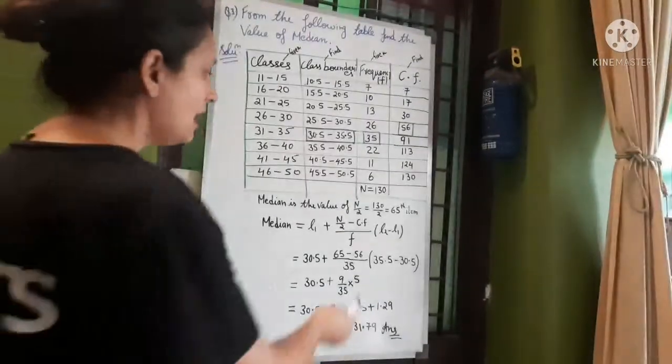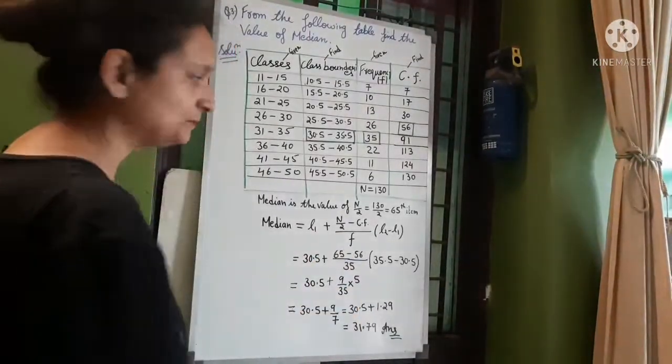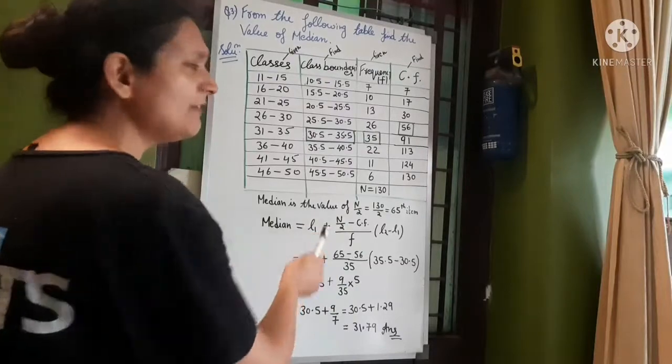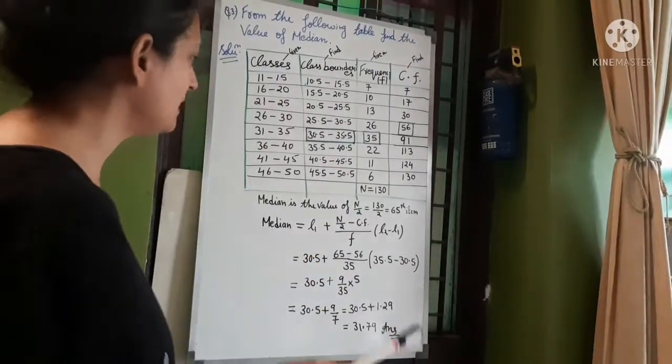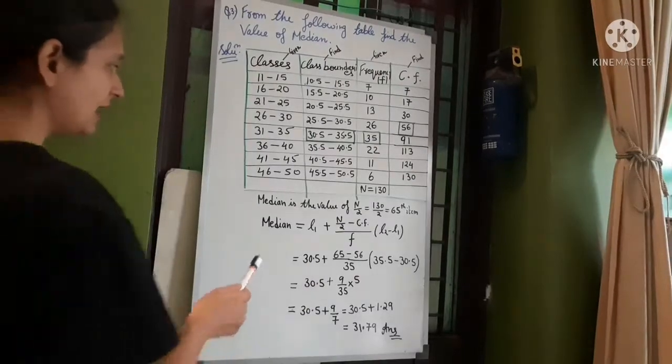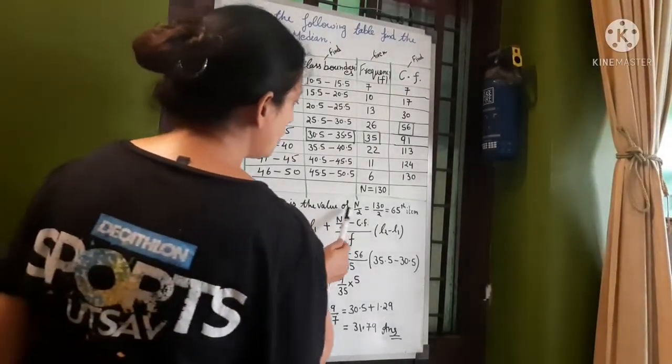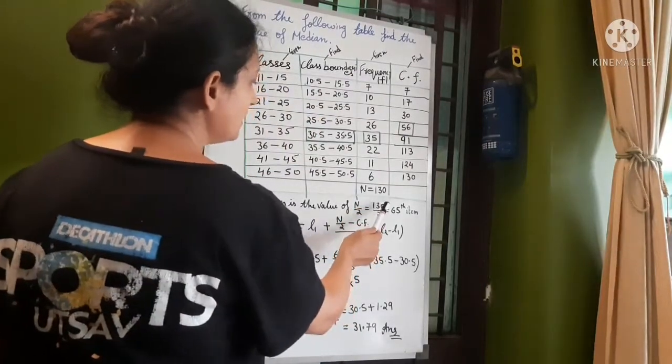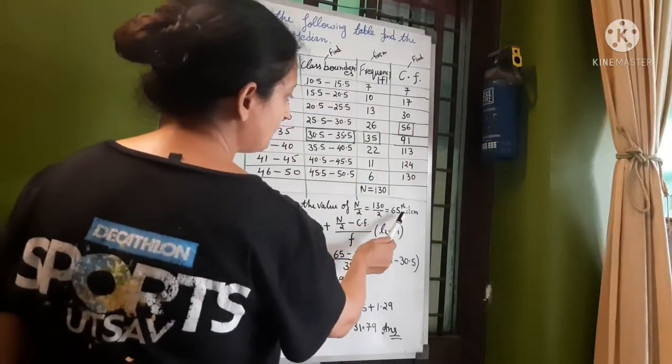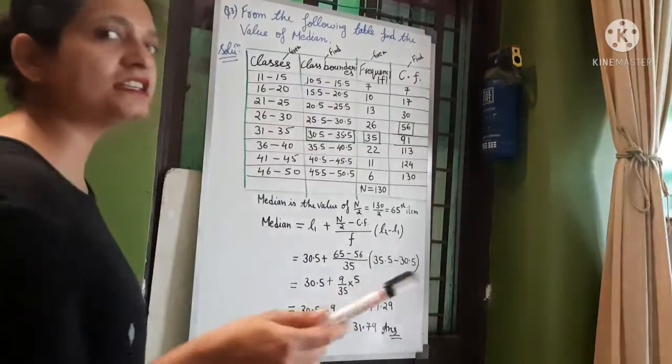Frequency n, frequency n sum, l1 lower frequency. Now see what is median value of n by 2? n what is? 65th item. 65th item.